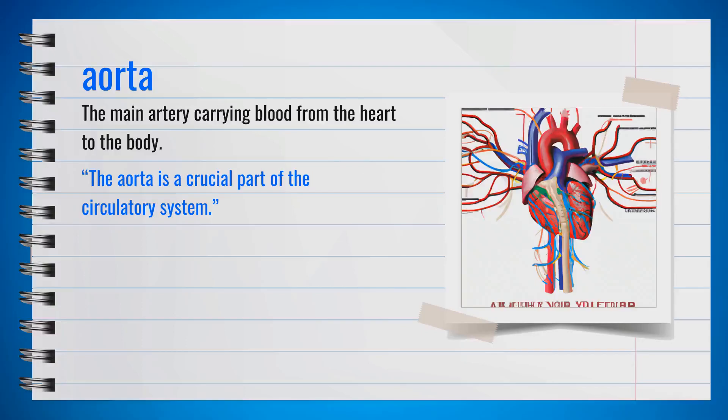The word aorta, spelled A-O-R-T-A, is a noun. Synonyms include the main artery. For example, the aorta is a crucial part of the circulatory system. In summary, the aorta is the main artery carrying blood from the heart to the body.